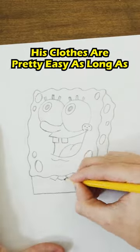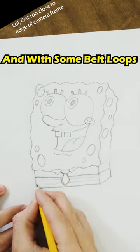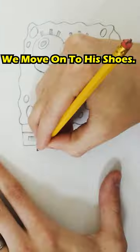His clothes are pretty easy as long as you don't make his tie too big or small, and with some belt loops and marshmallow pant legs, we move on to his shoes.